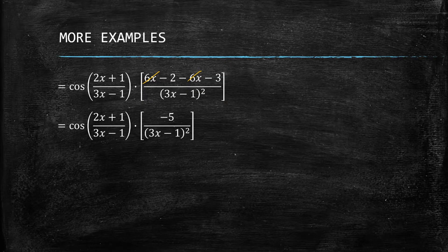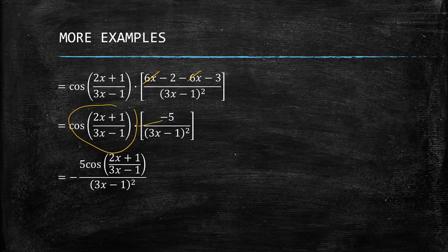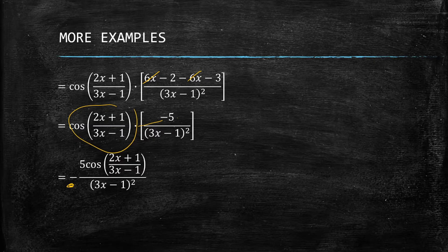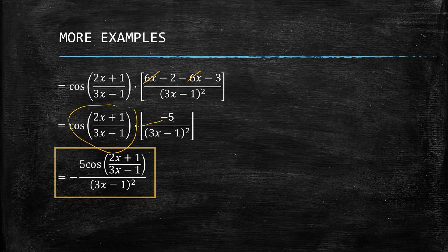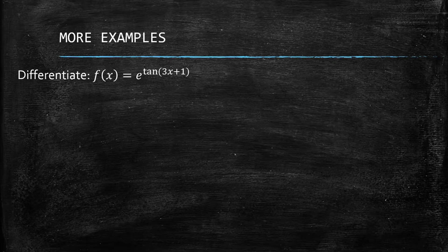We can write this as cosine of (2x + 1)/(3x minus 1) multiplied by negative 5, all over (3x minus 1) squared — and that is our answer for this example. Let's go on to the next example.